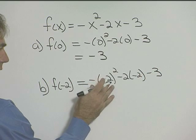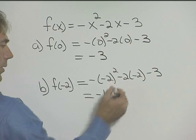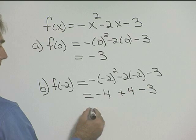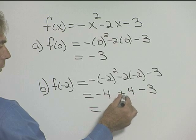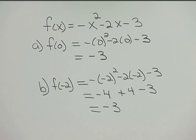So negative 2 squared is positive 4, but we have a negative out front so we'll make it negative 4. Negative 2 times negative 2 will be positive 4 minus 3. So negative 4 plus 4 is 0 minus 3 is negative 3. So f of 0 is negative 3 and f of negative 2 is negative 3.